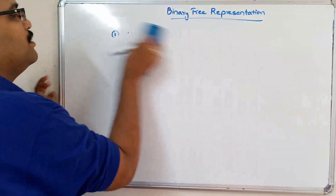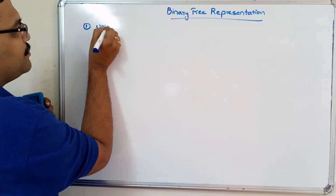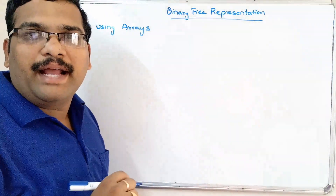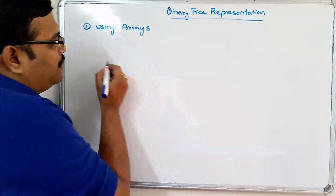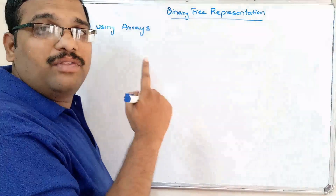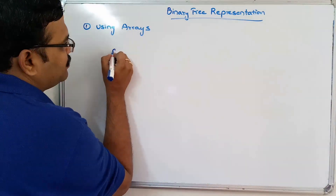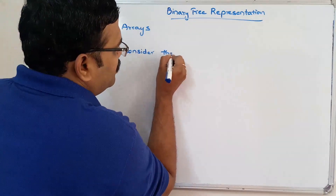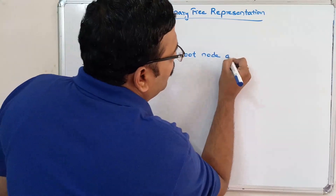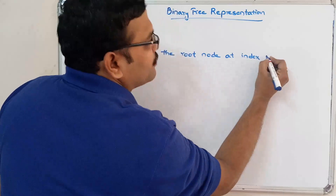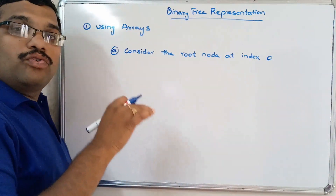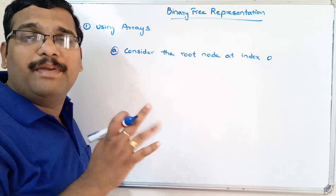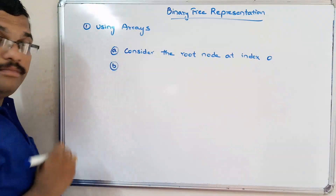First, using arrays — how a tree can be represented using a single dimensional array. We have to follow three steps while representing any tree into an array. The first step: consider the root node. The root node is placed at index 0. That means in every one-dimensional array, the zeroth index element will be the root element.